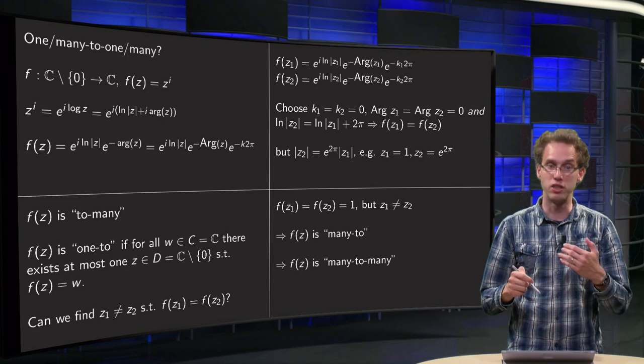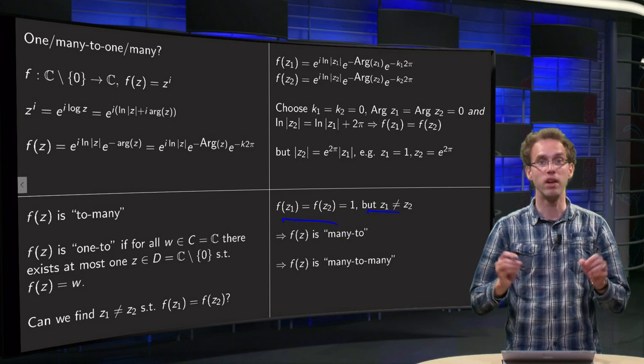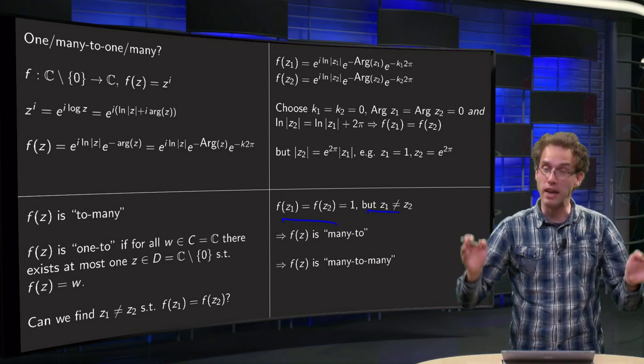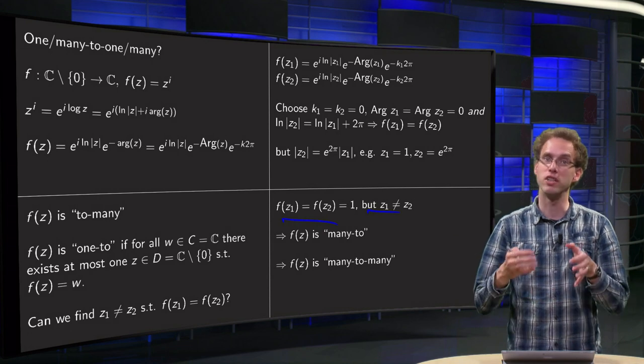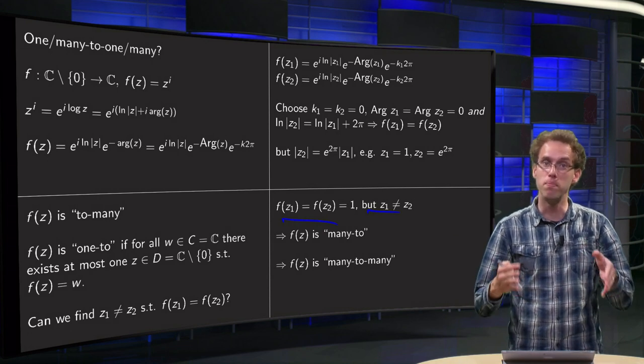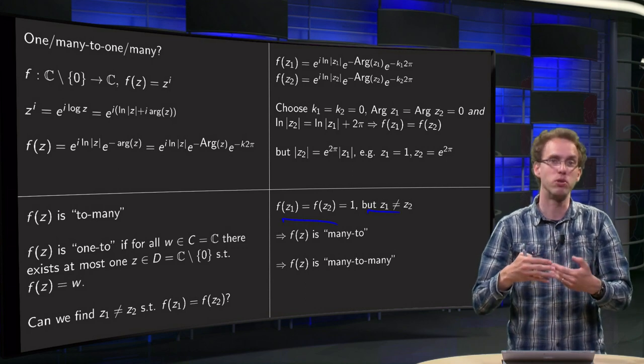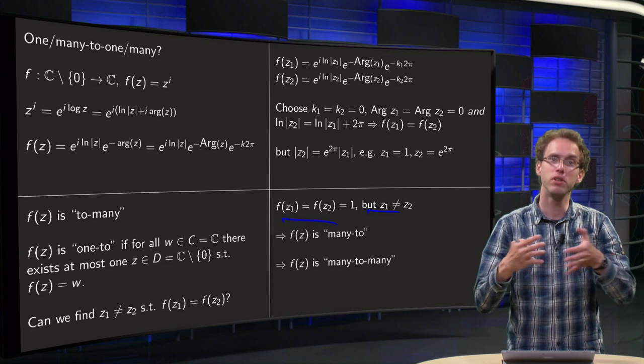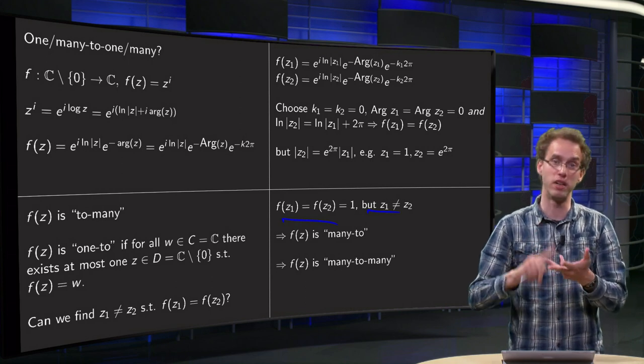So in that case you would have f(z1) = f(z2) = 1, but z1 ≠ z2. So f(z) is a many-to function. We had already that it was to-many. So in this case f(z) is a many-to-many function. You see you have to do quite a lot of work. You have to use the definitions. But then you can see whether f is one-to-one, one-to-many, many-to-one, or many-to-many.